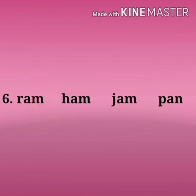The last one. The first word is R-A-M, ram; then H-A-M, ham; J-A-M, jam; and P-A-N, pan. Ram, ham, and jam are from the same '-am' sound, and the odd one is P-A-N, pan, which has the '-an' sound. So we will cross pan, the odd one out.